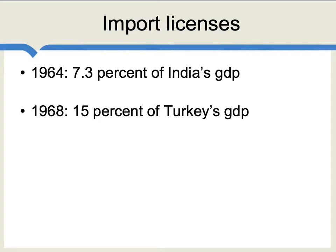Ann Kruger noted a startling fact — she went back and looked at import licenses. Import licenses, at the time they existed, were a permission you had to get from the government if you wanted to buy goods and services from abroad. You couldn't just spend your money; you needed to buy the import license. Many developing economies in the 1960s had import licenses, including India and Turkey. Kruger estimated that import licenses in India comprised 7.3% of India's GDP, and in Turkey in 1968, they comprised 15% of Turkish GDP.